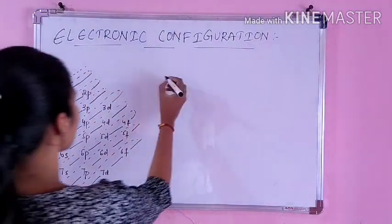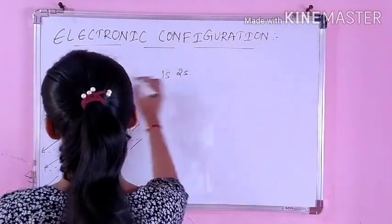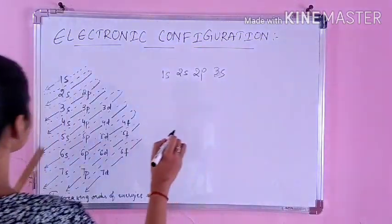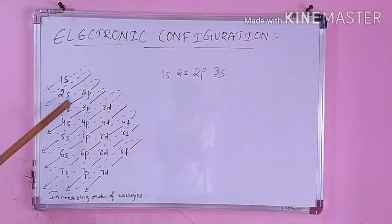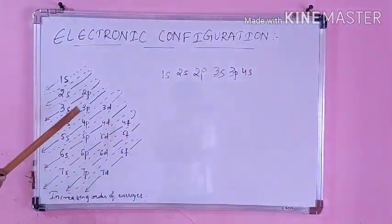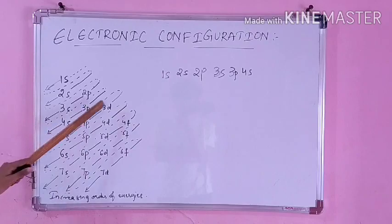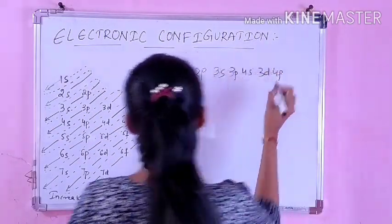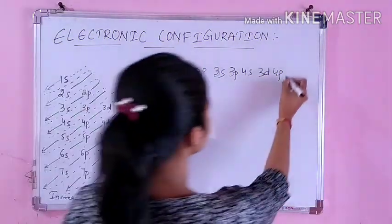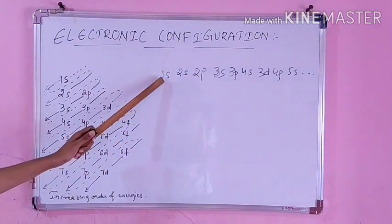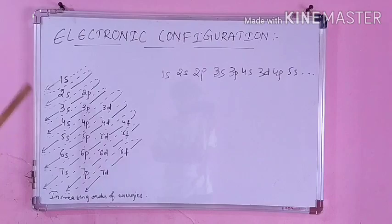So the increasing order of energy is: 1s, 2s, 2p, 3s, then 3p and 4s, then 3d, 4p. After 3p and 4s, you write 3d, 4p, 5s — and so on. Your energy is going on increasing, and like this you have to fill the electronic configuration.